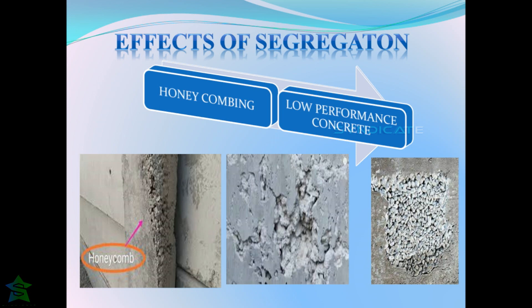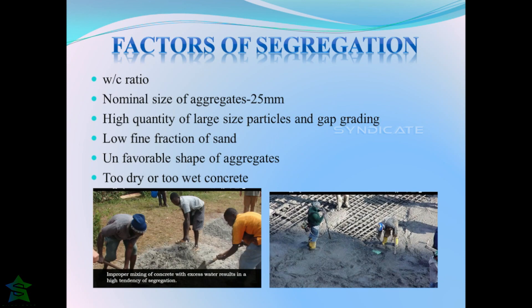Sometimes poor quality shuttering materials are used to form concrete members. Generally, cement slurry gets out from broken sides of formwork, which causes honeycombing as a result of segregation. Segregation also gives a low-performance concrete which leads to less homogeneity and formation of shrinkage cracks. Various factors influence the segregation of concrete. The cement paste must be cohesive enough to hold the materials together.